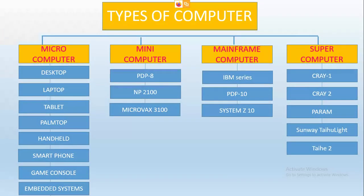Next we will see a flowchart I have made. Try to understand the examples of these computers. Under the microcomputer, which computers come? Desktop, laptop, tablet, palm top, handheld, smartphone, game console, and embedded systems.